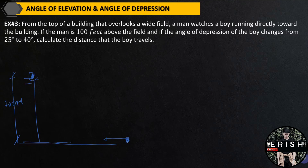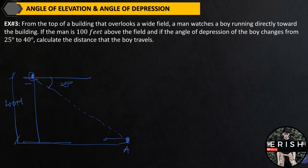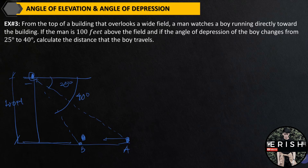In the first observation, the boy is at point A. The first angle of depression is 25 degrees. Since the boy is running toward the building, in the second observation the boy is at point B — closer to the building. The second angle of depression is 40 degrees. Calculate the distance that the boy travels — that is, the distance between the two points of observation.